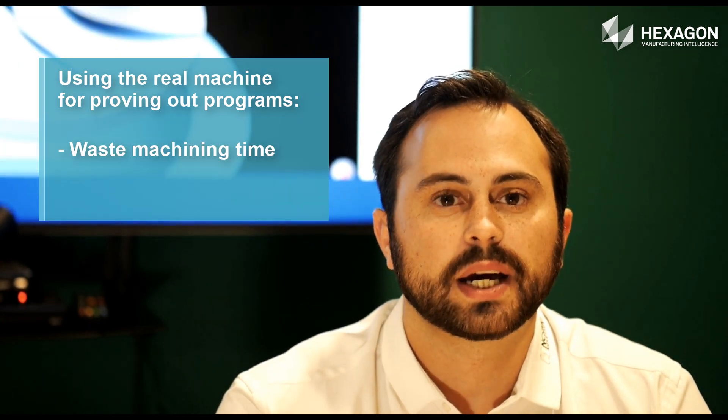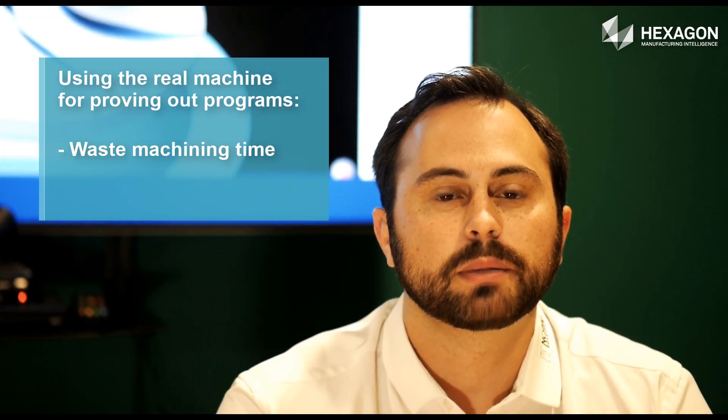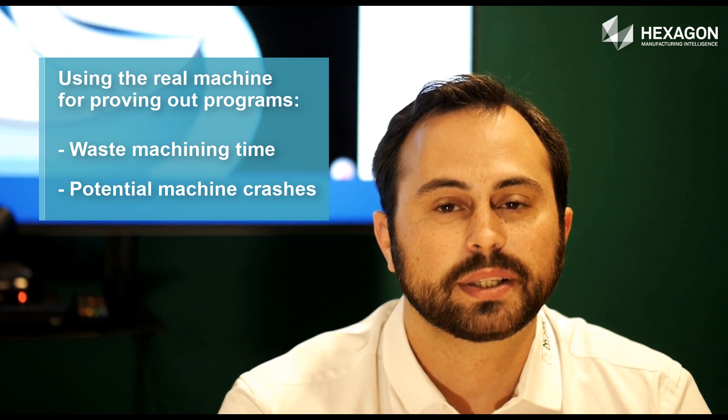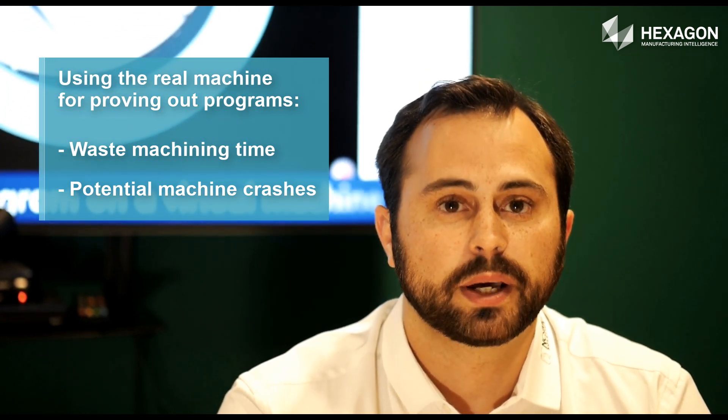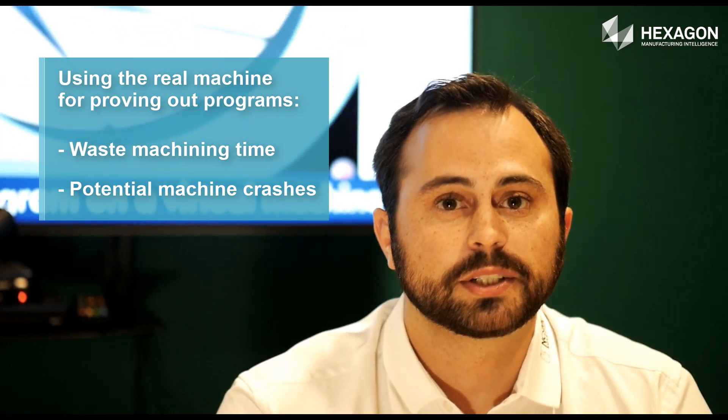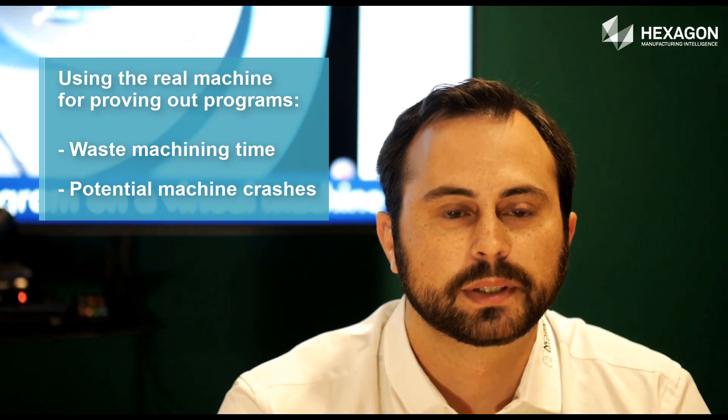As you know, using the real machine for proving out programs is a waste of time and can generate machine crashes that represent between twenty thousand and fifty thousand dollars in repairs, not to mention the time spent to rebuild the machine. NC Simul validates the final code, also known as G-code, and replaces the final test that's usually done on the real machine before production.